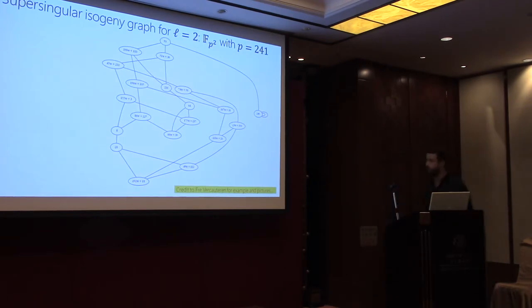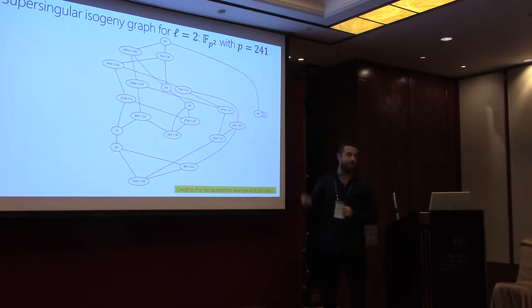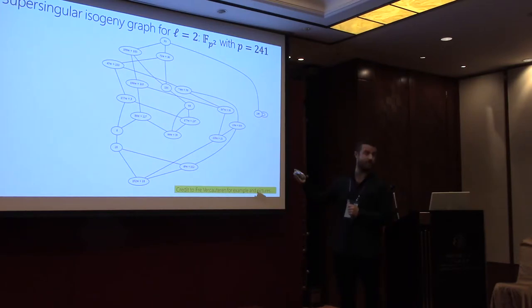This is another nice picture I stole from Frey. This is an isogeny graph when the prime is 241, so this is a very small toy example. There's 20 nodes in this graph, roughly P over 12 nodes in the isogeny graph. We can assume here that we're Alice. Alice is going to use two isogenies. In SIDH currently, we use two and three isogenies. Alice uses two isogenies or 2 to the E isogenies, and Bob uses three isogenies.